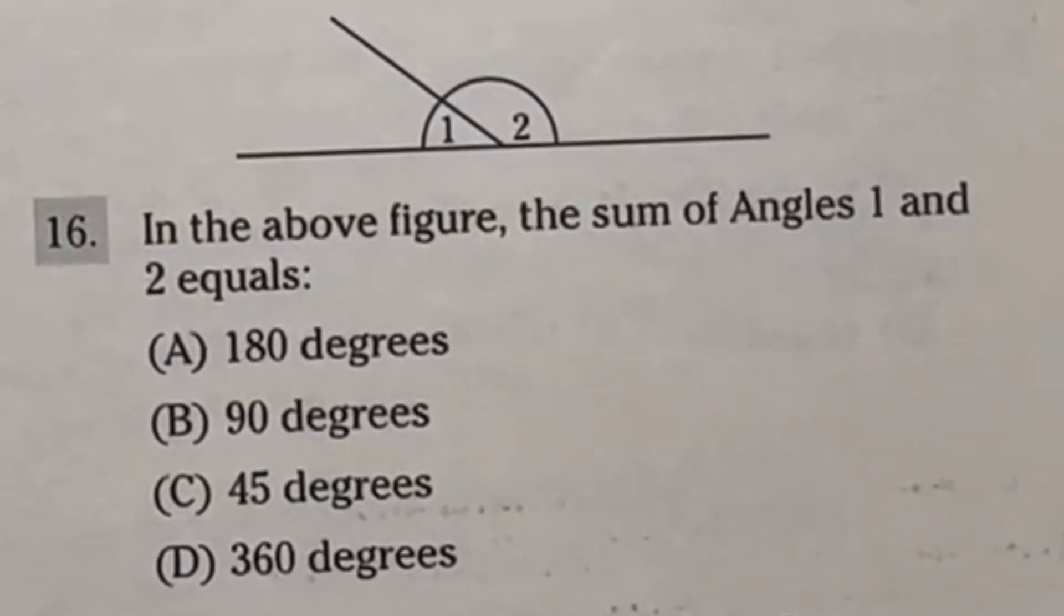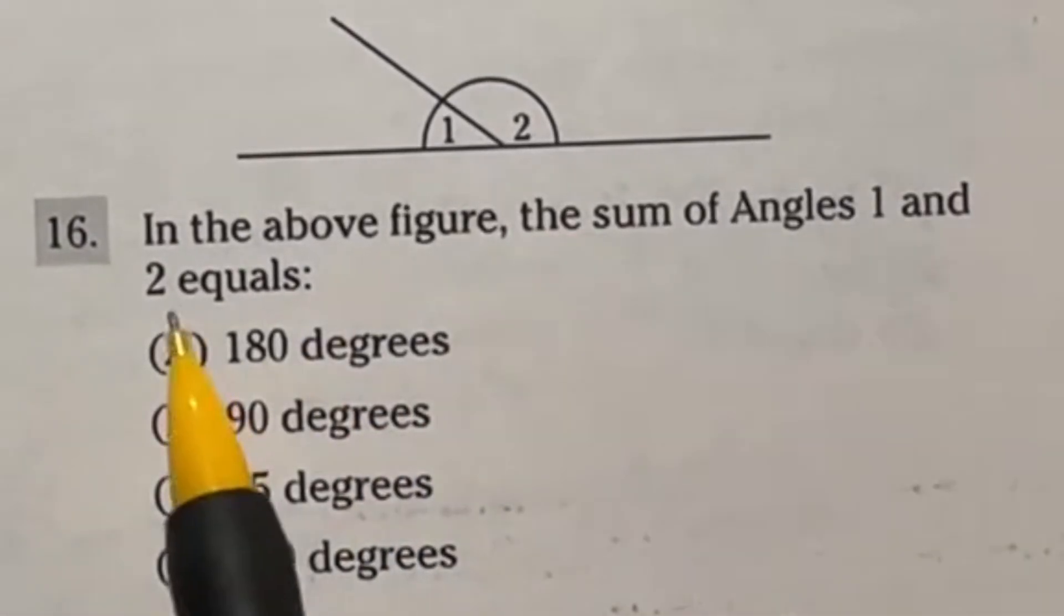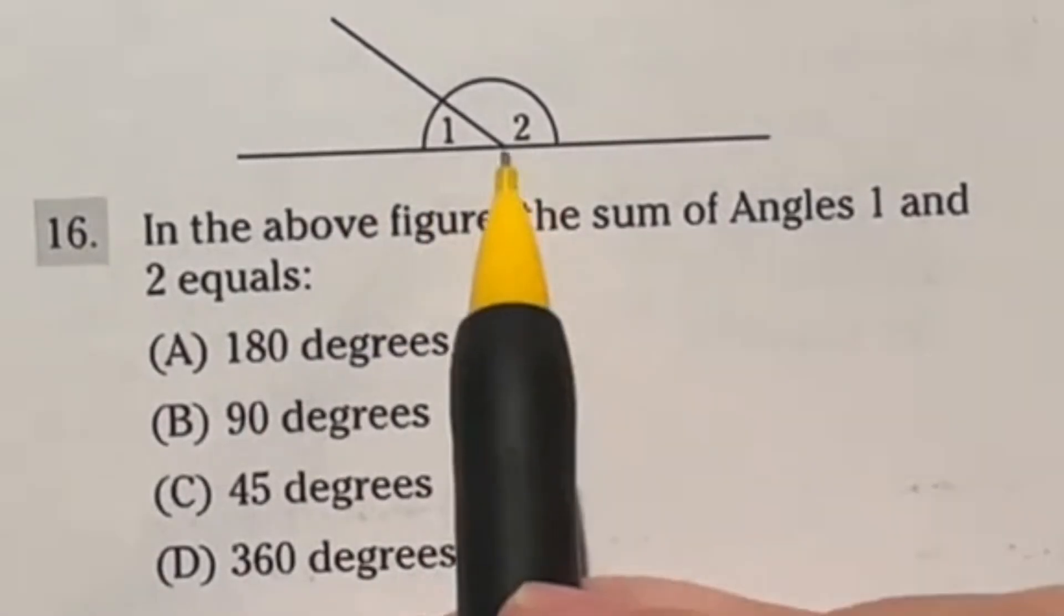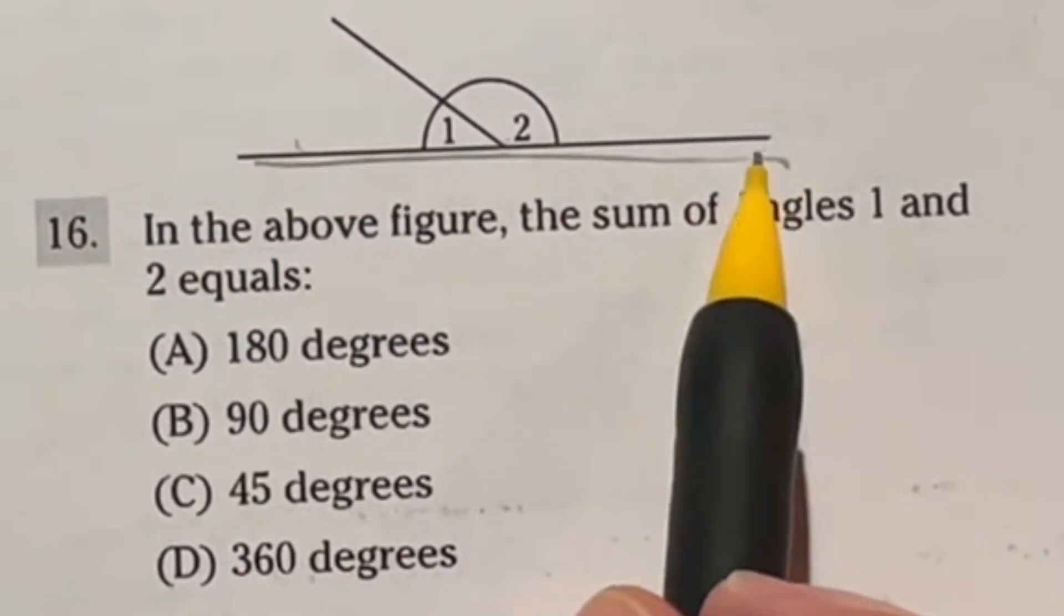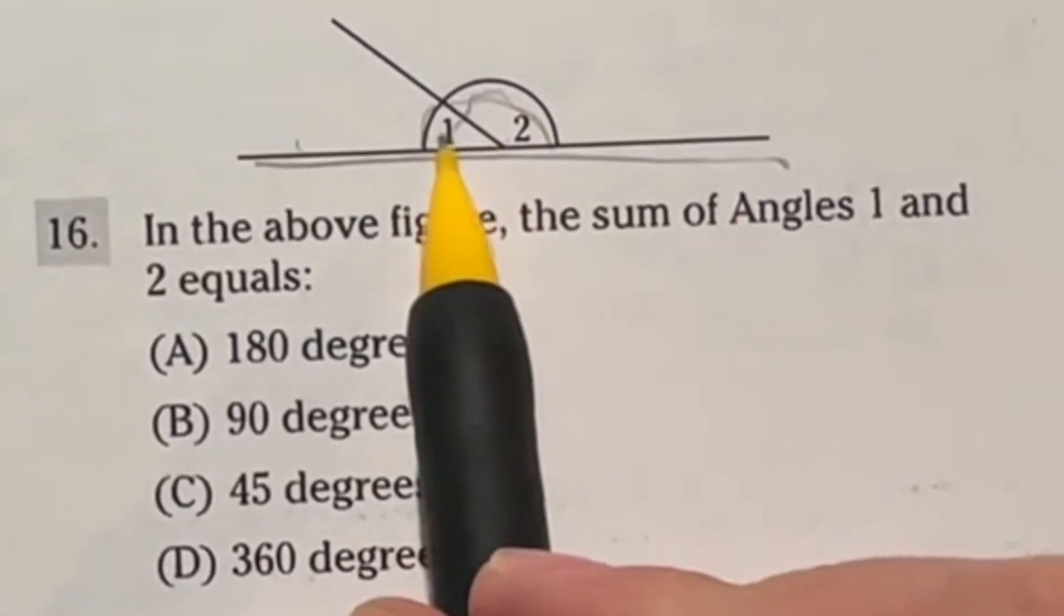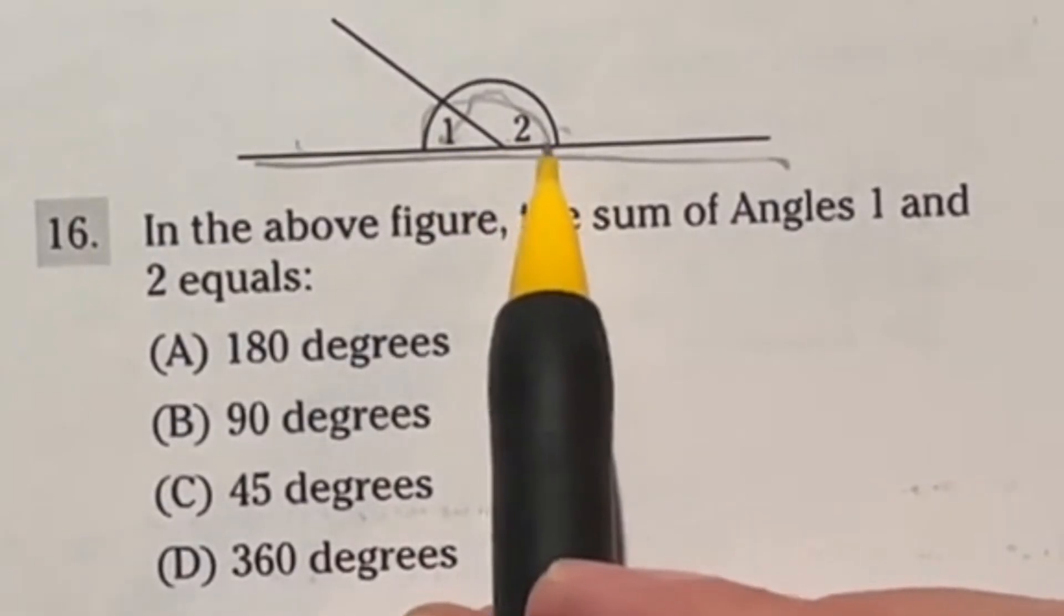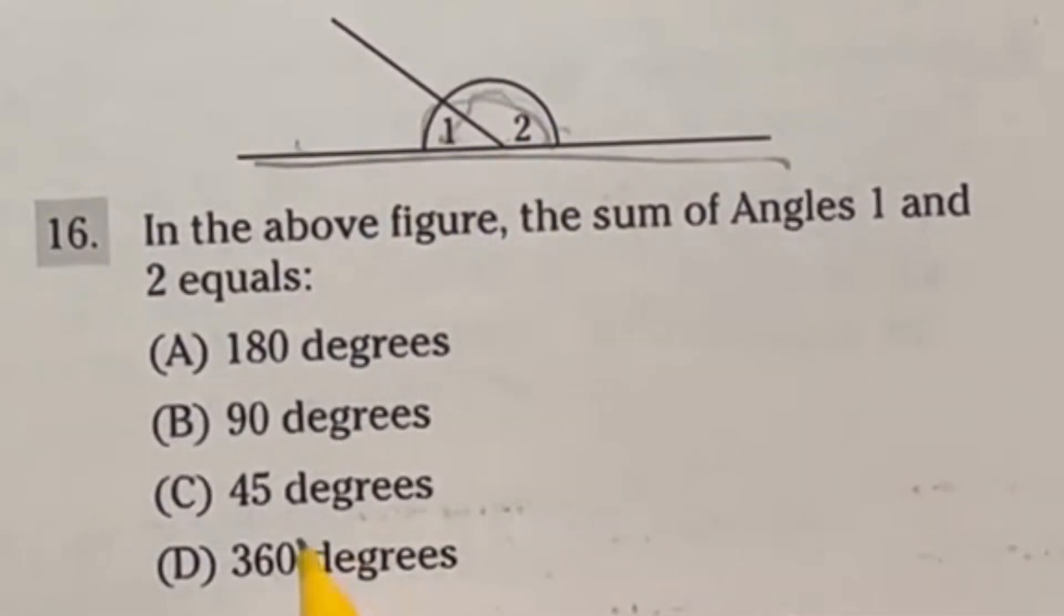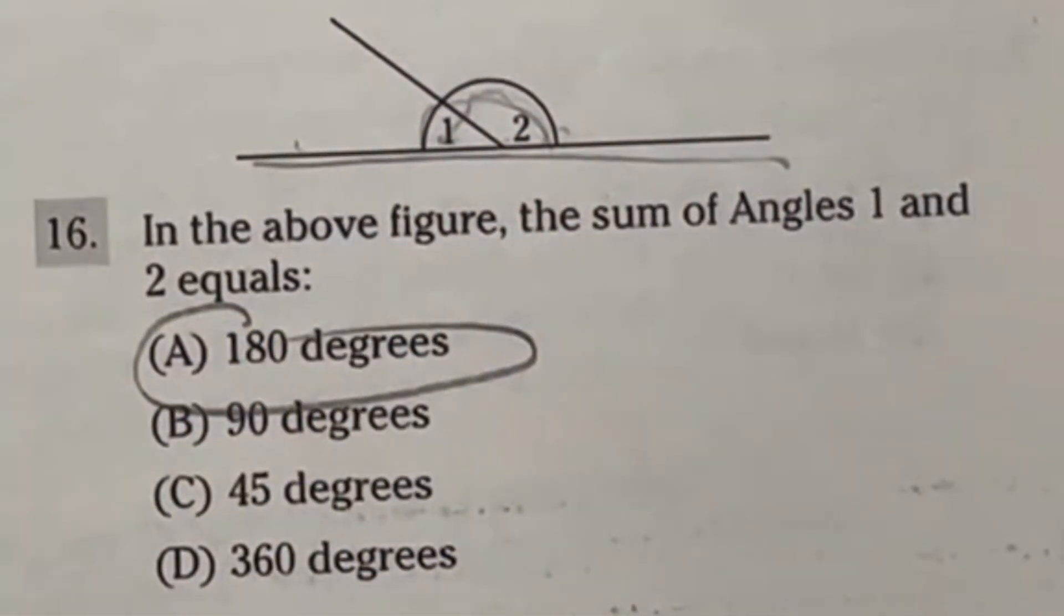Number 16 on the ASVAB says, in the figure above, the sum of angles 1 and 2 equals what? Well, look here. Angles 1 and 2 lead to this straight line. Well, a straight line always has 180 degrees in it. So I don't care which one's which, they add up to a straight line. So our final answer here is going to be A, 180 degrees.